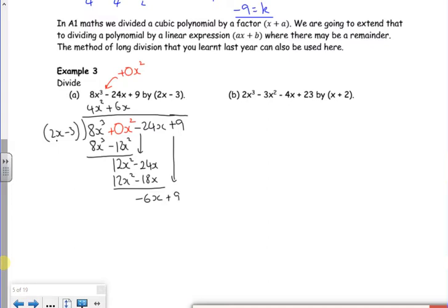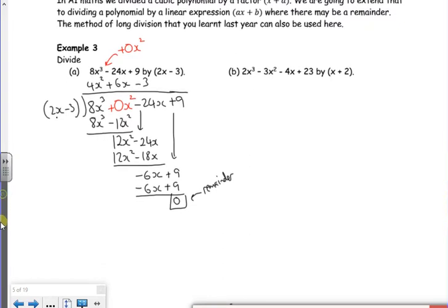How many times does 2x go into minus 6x is minus 3 times. Minus 3 times by the bracket, the 2x minus 3 is minus 6x add 9. Top take bottom leaves me zero. I've got nothing else to bring down. So my remainder is zero and it perfectly fits in. 2x minus 3 is a factor.